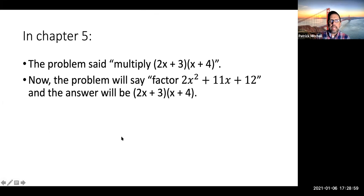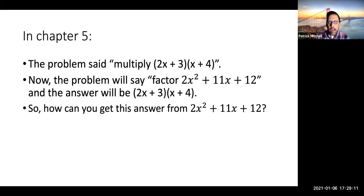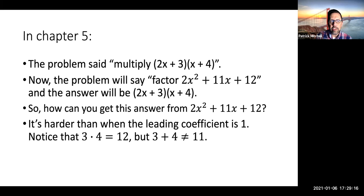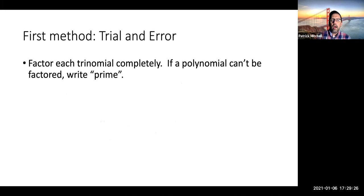The Chapter 6 version of this problem will say: factor 2x² + 11x + 12, and we have to come up with (2x + 3)(x + 4). That is the big question in this section. The 12 does come from 3 times 4, but the 11 does not come from 3 plus 4.